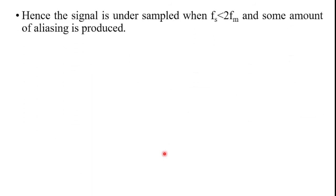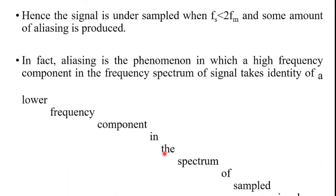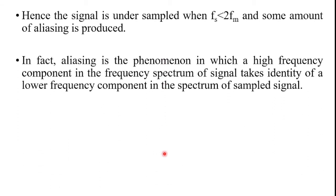Aliasing is the phenomenon in which a high frequency component in the frequency spectrum of the signal takes identity of a lower frequency component in the spectrum of the sample signal.